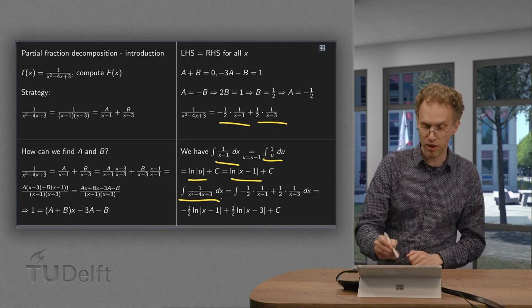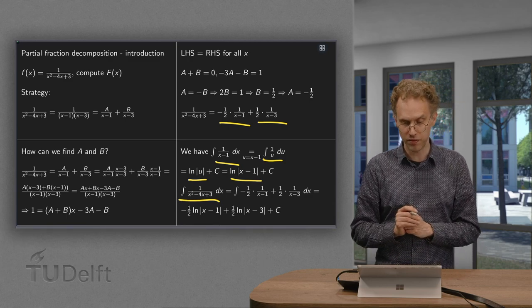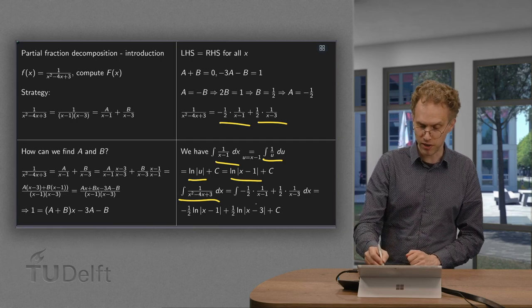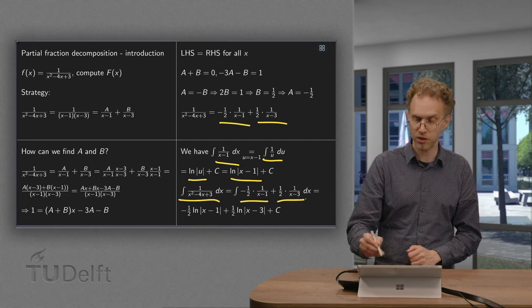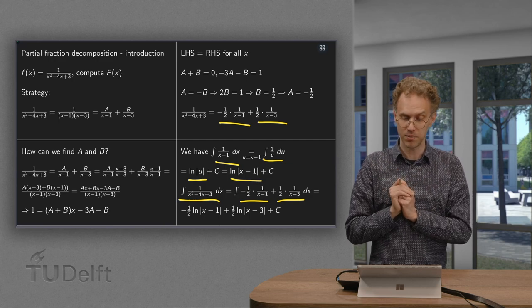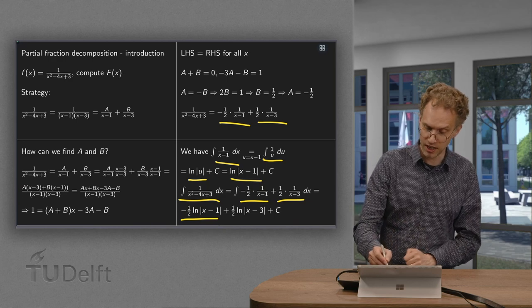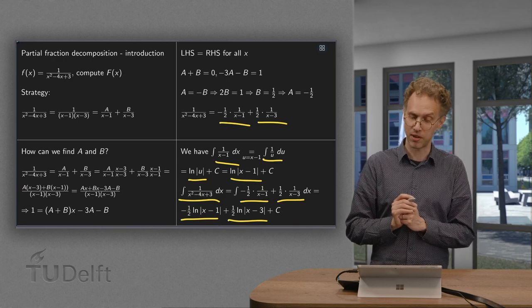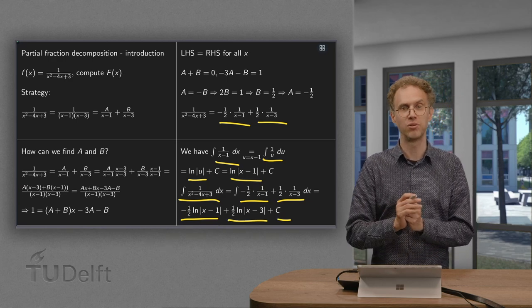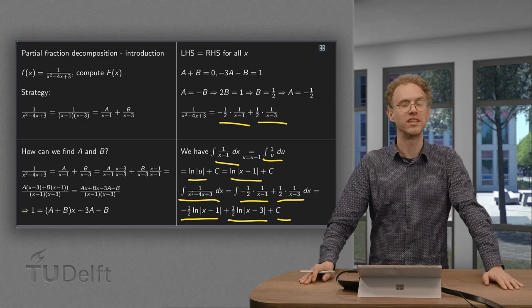The integral of our fraction equals minus 1/2 times this term plus 1/2 times the other. We can integrate both terms. The first gives minus 1/2 ln(x minus 1). The second gives 1/2 ln(x minus 3) plus integration constant. There we have our antiderivative.